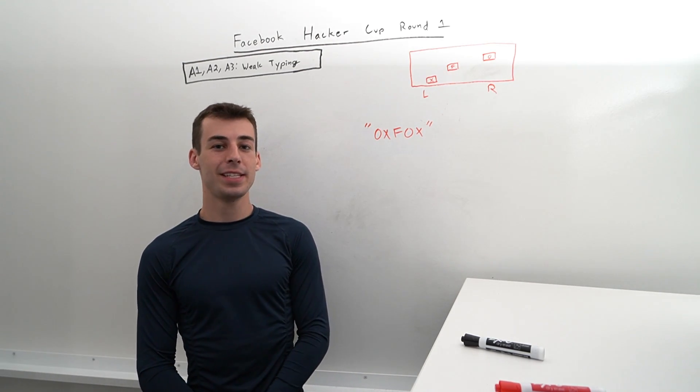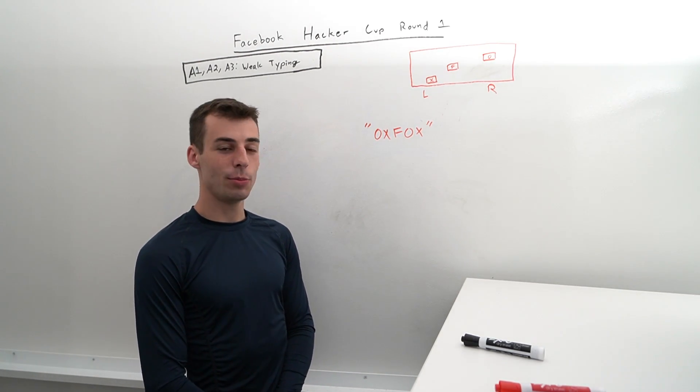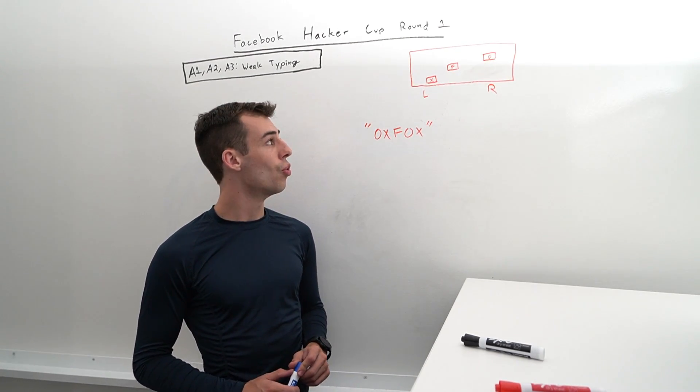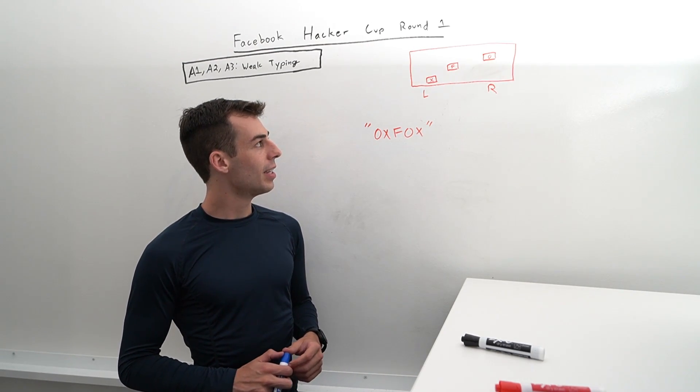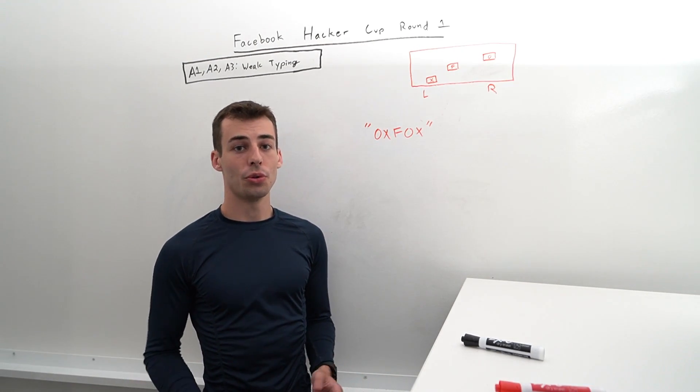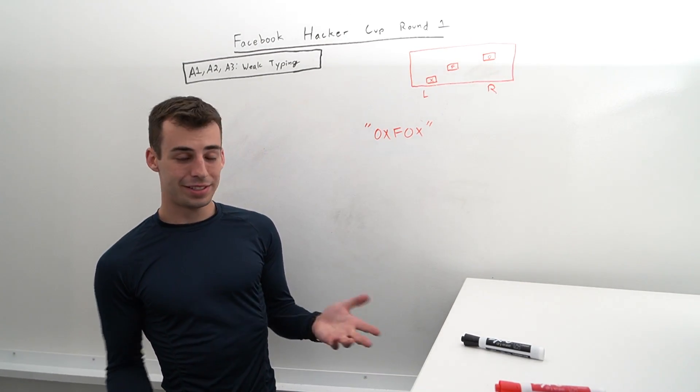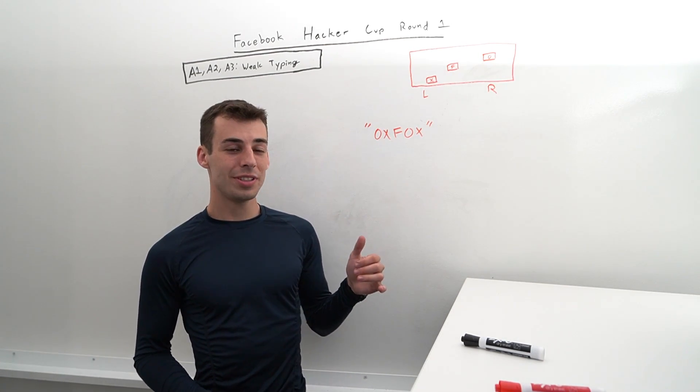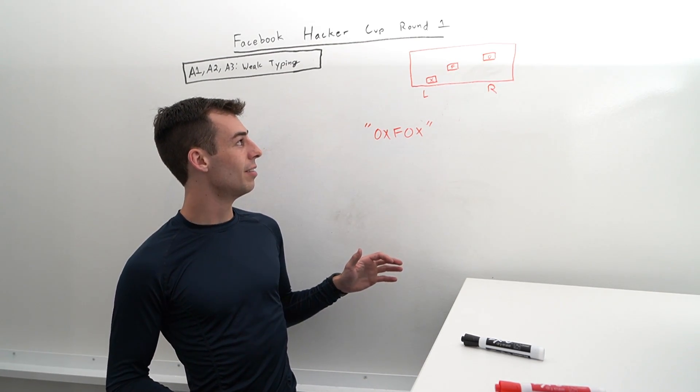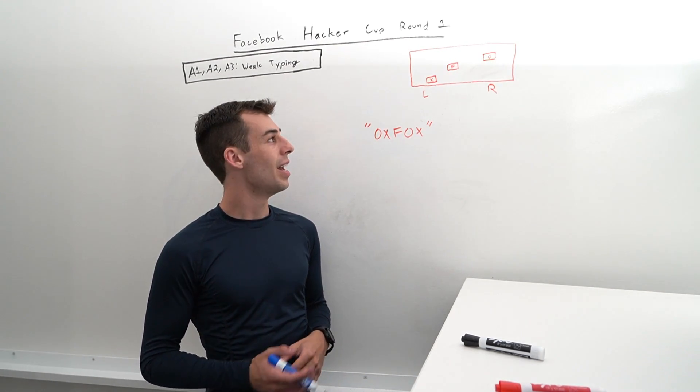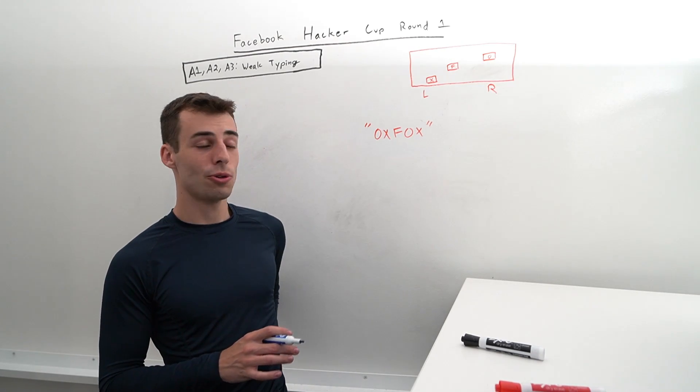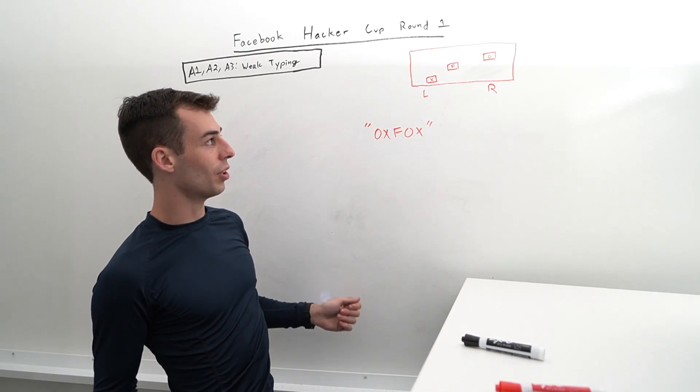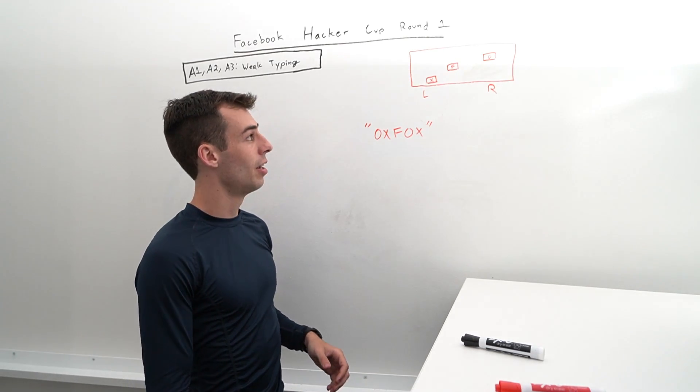In this problem, Tiny Timmy the typist has a keyboard with characters F, O, and X. He's going to type a string consisting only of these characters. Since Tiny Timmy is very tiny, he can only use his left hand to type X and F, and his right hand to type O and F. He can't type X with his right hand because it's too far left, and he can't type O with his left hand because it's too far right.